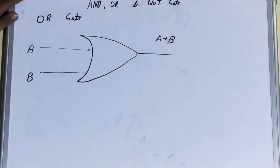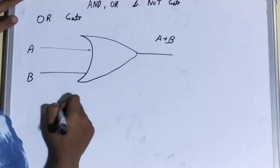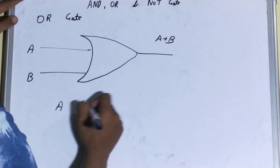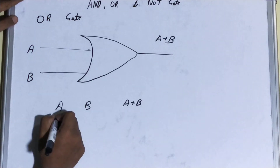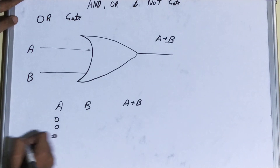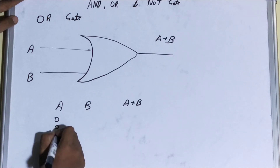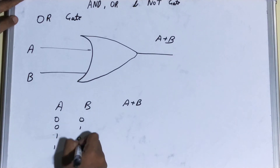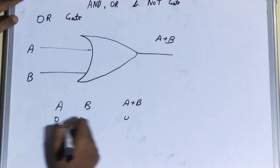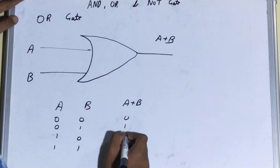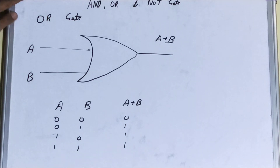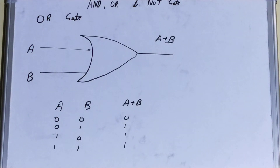Now the truth table for the OR gate: A, B, and A plus B. Zero-zero gives zero, zero-one gives one, one-zero gives one, and one-one gives one. So this is your truth table for the OR gate.